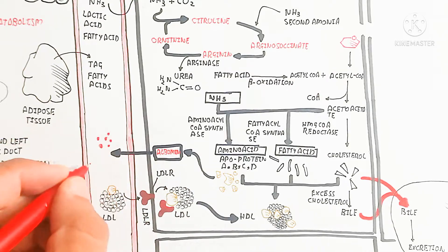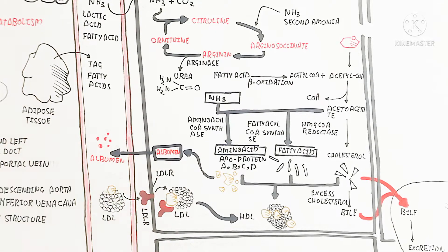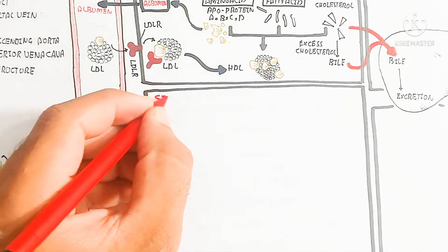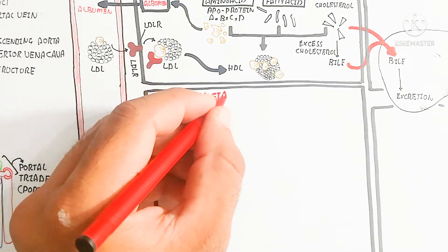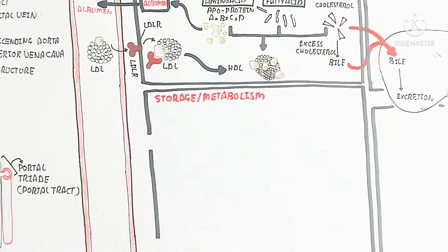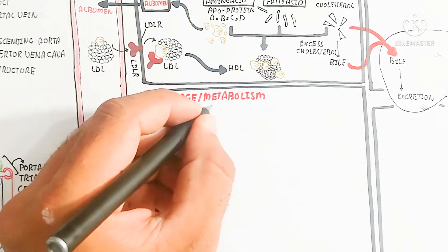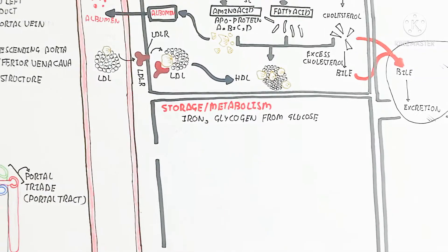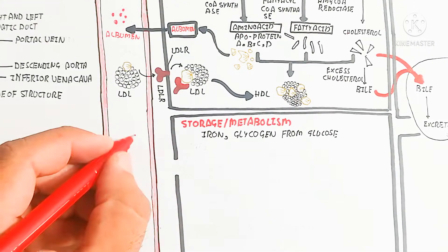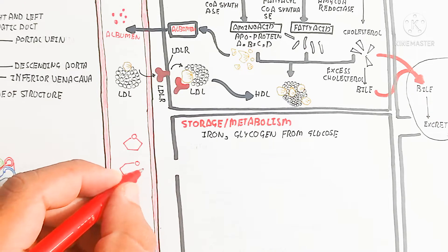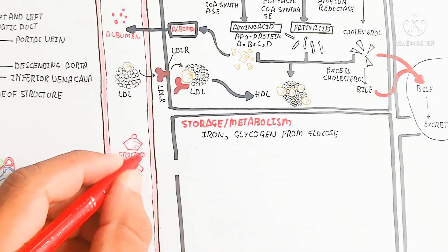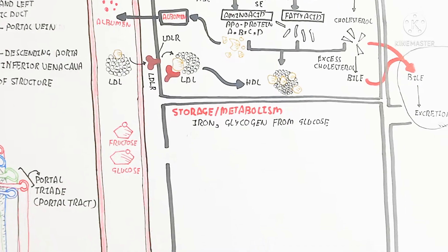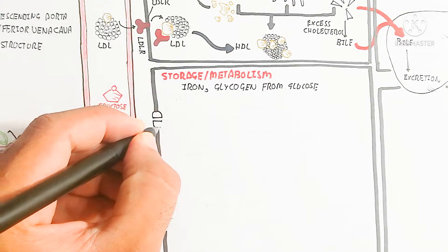Protein is also converted into albumin, which enters the blood. Albumin is very important for maintaining osmolality and osmosis in the blood, as well as maintaining blood volume. Due to its negative charge, albumin attracts sodium ions and retains water, helping maintain blood volume.